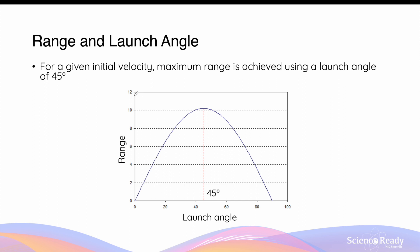As we discussed in an earlier video on projectile motion, for a given initial velocity, the maximum range of an object is achieved using a launch angle of 45 degrees. As you can see in this graph, the maximum range occurs at an angle of 45 degrees.